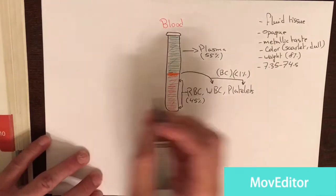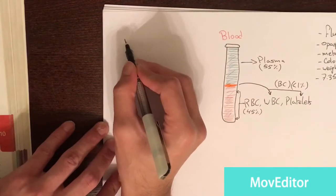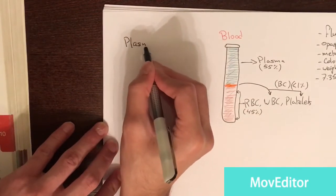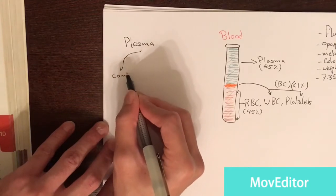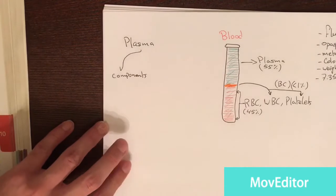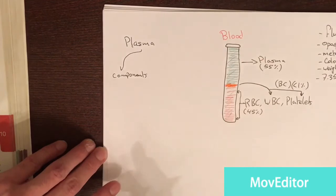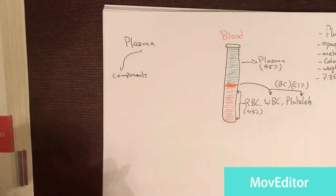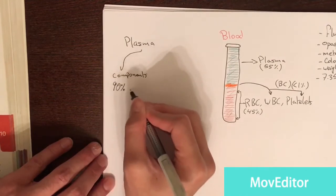Now, let's talk about plasma in details. What are the components of plasma? The components of plasma, there are many things that are dissolved in the plasma. But you should know that plasma is like a solvent. 90% of plasma is water.